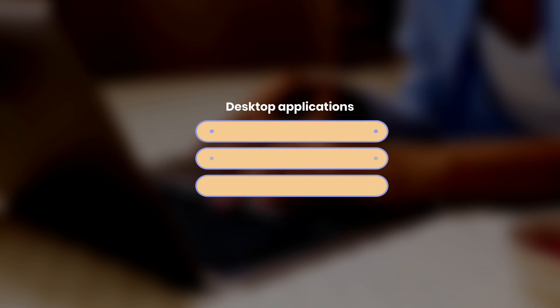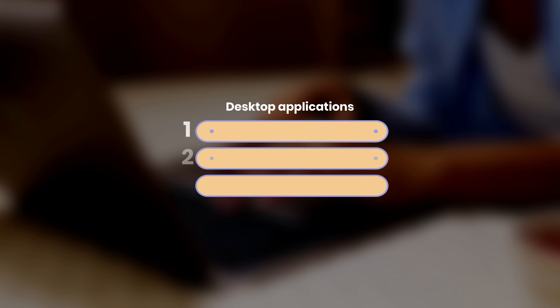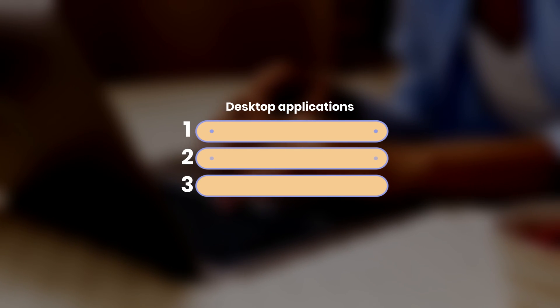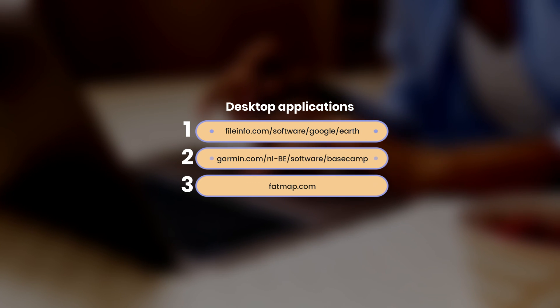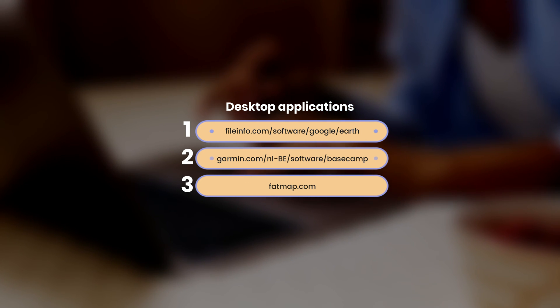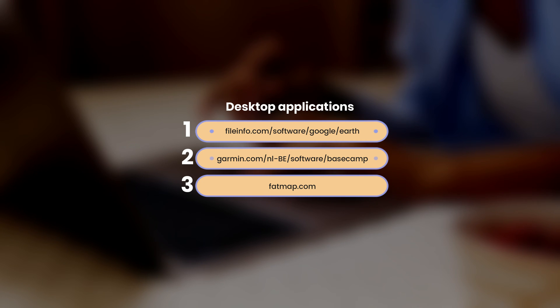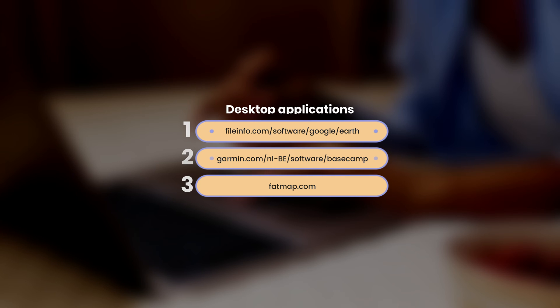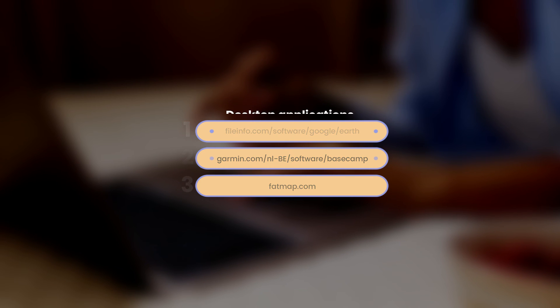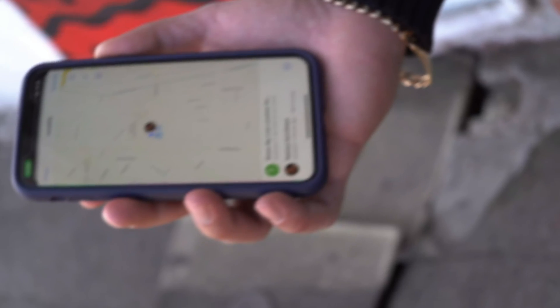With a PC, you can also utilize other desktop applications such as fileinfo.com/software/google/earth, garmin.com/nl-BE/software/basecamp, and fatmap.com. All the links are in the description.